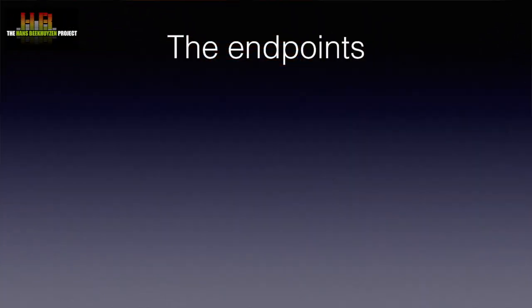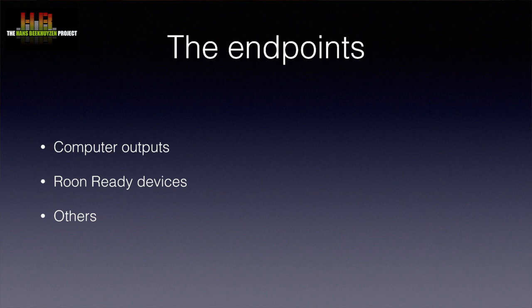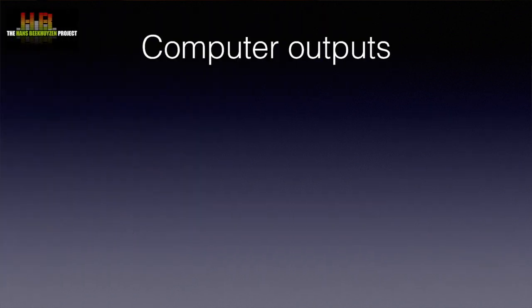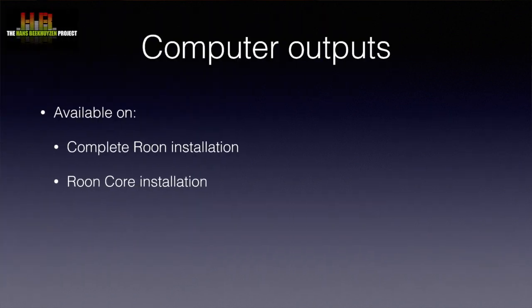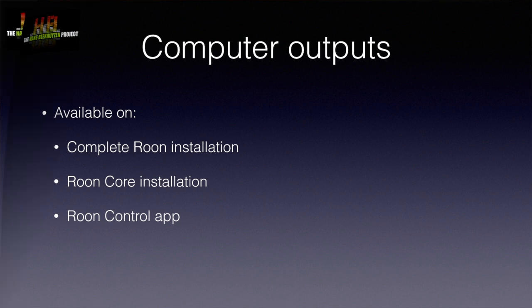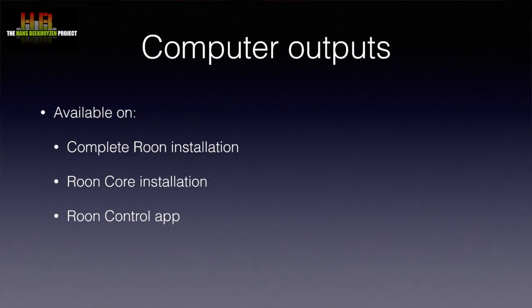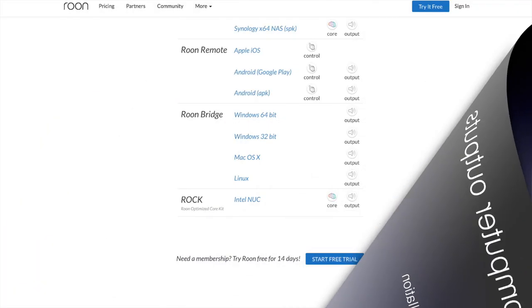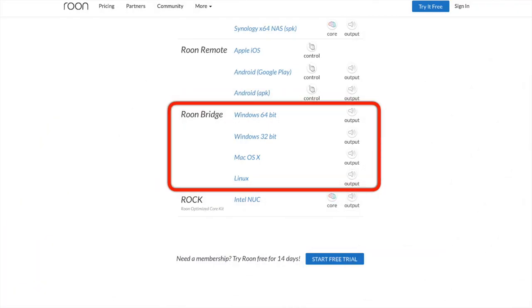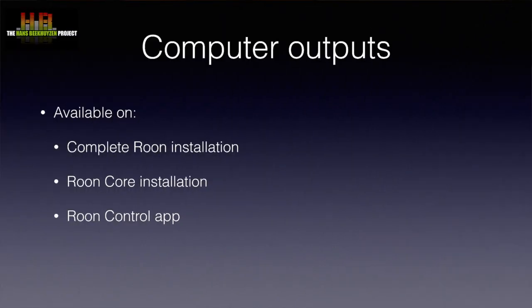Every device that is able to play music sent to it by Roon is called an endpoint. To make things easier to understand, let's divide the endpoints into three groups: computer outputs, Roon ready devices, and others. The computer speakers or audio equipment connected to a computer will automatically be available when the complete Roon installation — the Roon Core or the Roon control app — is installed. If you want to use a computer as an endpoint but it doesn't run the Core and you don't need to control it from that computer, you can install the Roon Bridge software. The Roon Bridge software effectively makes the computer a Roon ready device.